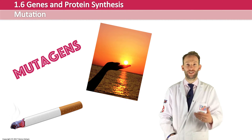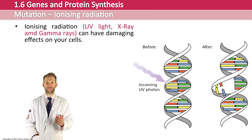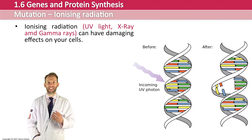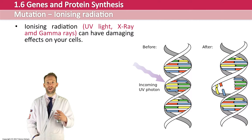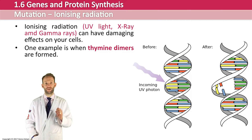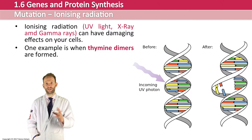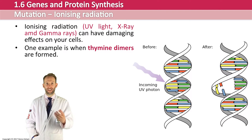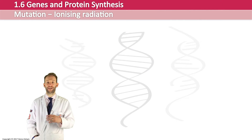Ionizing radiation — things like UV light, x-rays, and gamma rays — can have really damaging effects on your cells. This is because it transfers energy to the atoms and molecules in the cells, causing them to become ionized or excited. One example is thymine dimers, which can be formed through ionizing radiation. The energy causes two adjacent thymines to link together, causing distortion of the double helix, bad pairing on the opposite strand, and it can block DNA polymerase — affecting DNA replication and having serious effects.